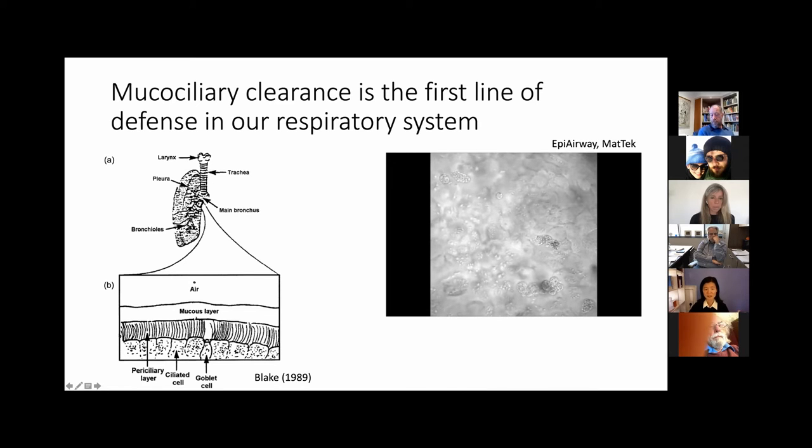When we breathe, particles go into our airway and eventually to the lung. Particles include aerosolized virus particles and bacteria and dust particles and allergens. Those particles come in and land on the mucus layer, the thin fluid, sticky fluid that coats the surface of the epithelium. The epithelium consists of the ciliated cells and goblet cells and some basal cells as well.